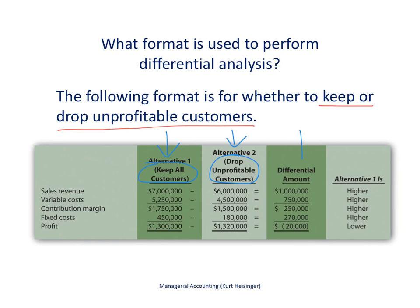The third column shows the actual differential amount between the two alternatives. The last column shows whether alternative one — keeping all customers — is higher in terms of sales revenue, variable cost, contribution margin, and fixed cost. And what we'll see is that alternative one is actually lower in profit. You'll notice we're looking at a contribution margin income statement format here, and I have a separate video on that topic.